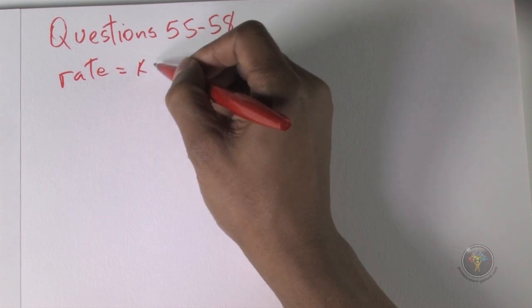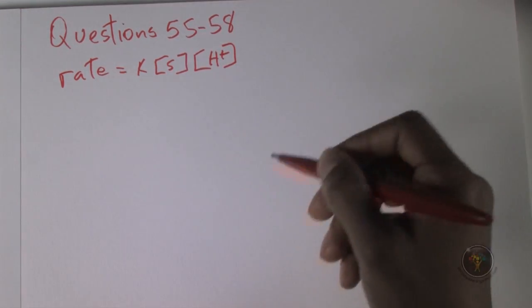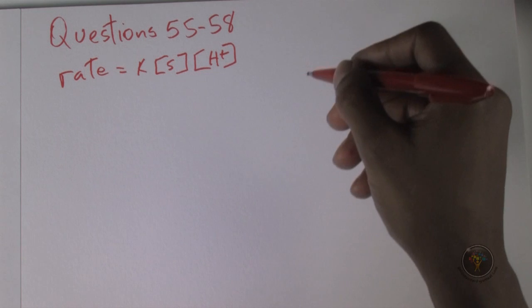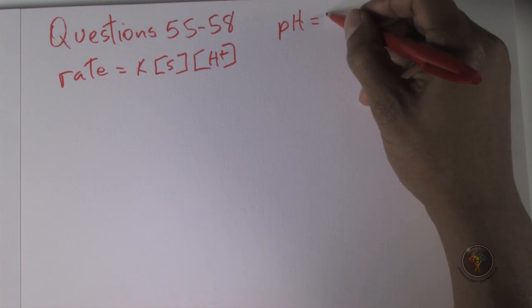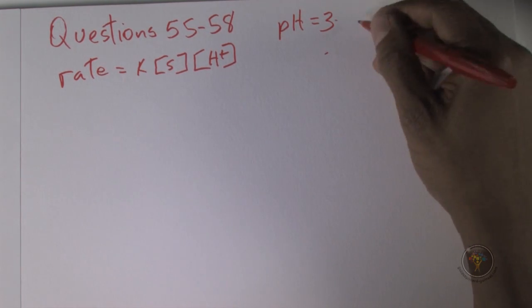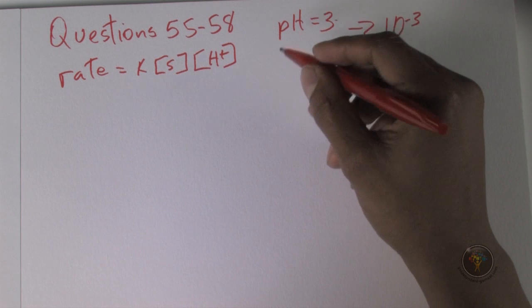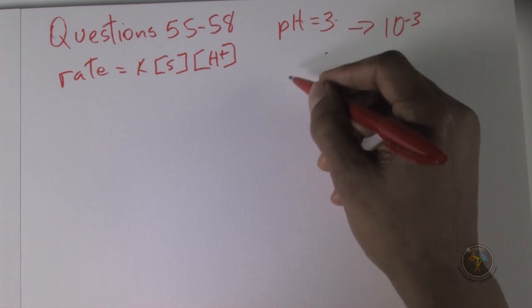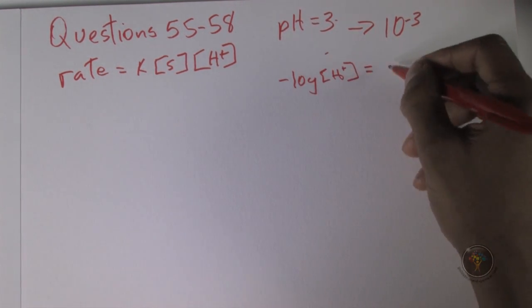We're given the pH, so we know the hydrogen ion concentration. The pH is equal to 3. When you get used to this, you'll start doing this in your head - a pH of 3 means 10 to the minus 3 hydrogen ion concentration. But we'll work it out. pH equal to 3 means that negative log of hydrogen ion concentration is equal to 3.